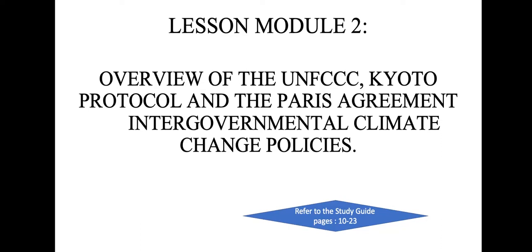Lesson Module 2 is all about the overview of the UNFCCC, the Kyoto Protocol, and the Paris Agreement. These are intergovernmental climate change policies. The UNFCCC we normally call the Convention. We will provide an overview of what these treaties are, what their processes are, and what they are doing.